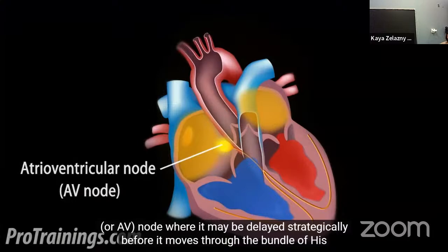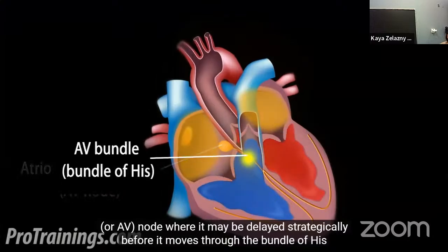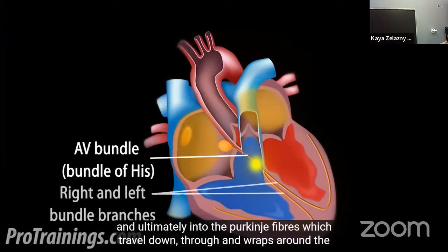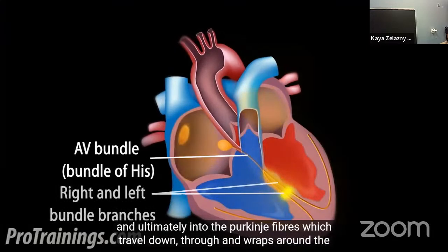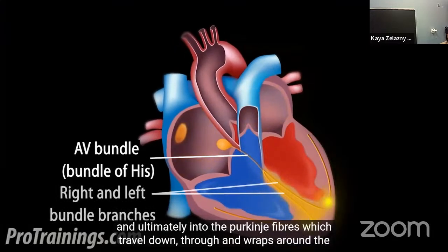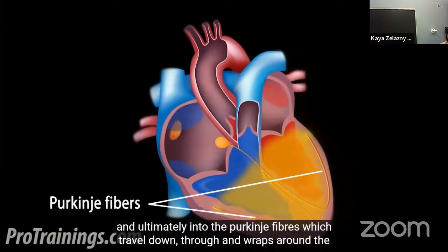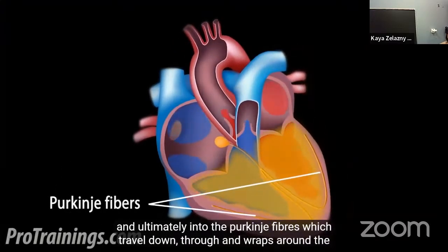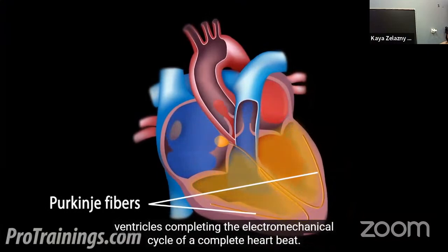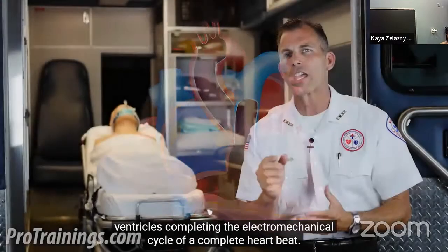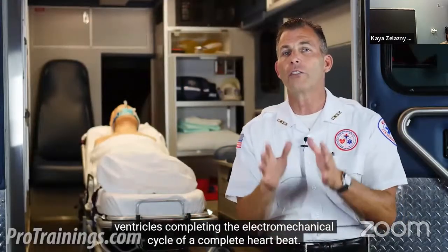At the AV node, the impulse may be delayed strategically before it moves through the bundle of His and ultimately the Purkinje fibers, which travel down and wrap around the ventricles, completing the electrical cycle of a complete heartbeat.